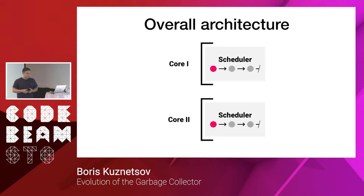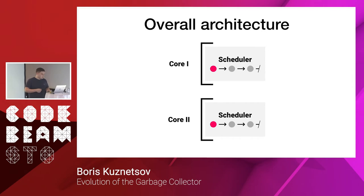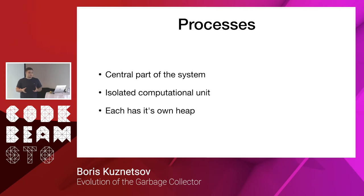The overall architecture of the virtual machine is: we have schedulers, each with a queue of processes, and we have one scheduler per core. In previous versions of Erlang it was a common shared queue from which processes would be picked by the schedulers, but now we have separate queues for each scheduler. The process in the Erlang virtual machine is a key part of the system and it is also an isolation unit of computation.